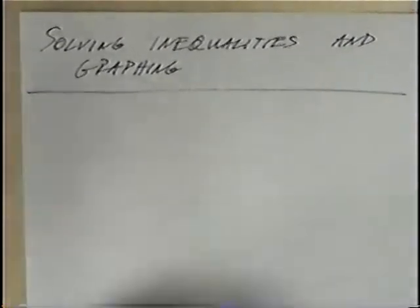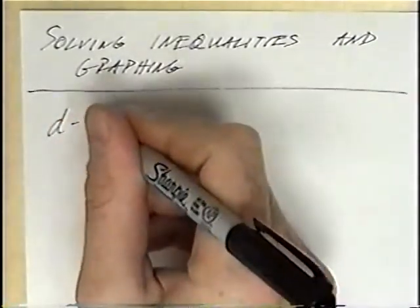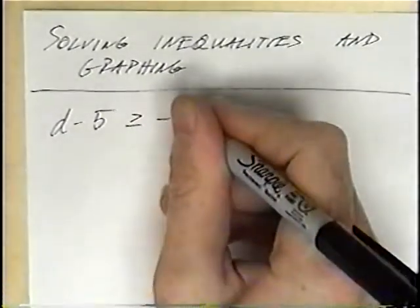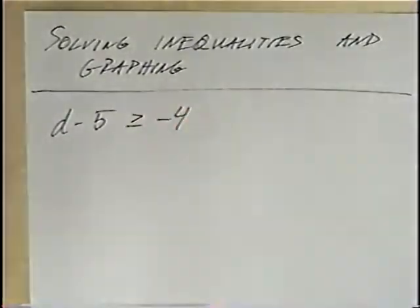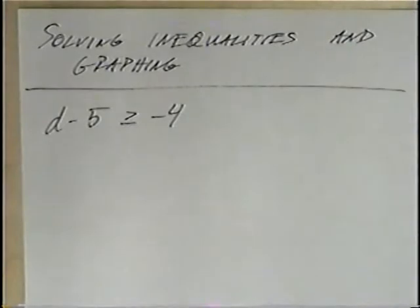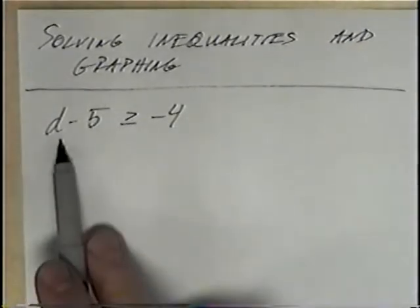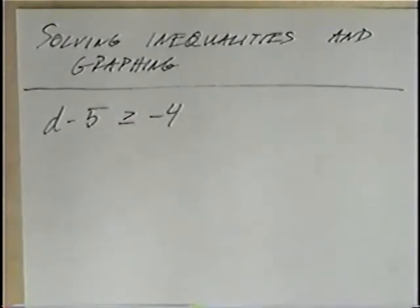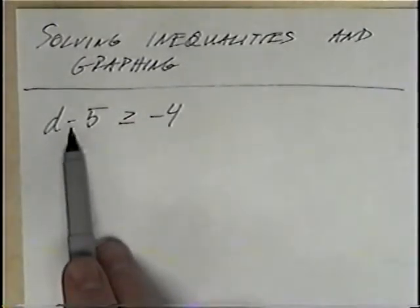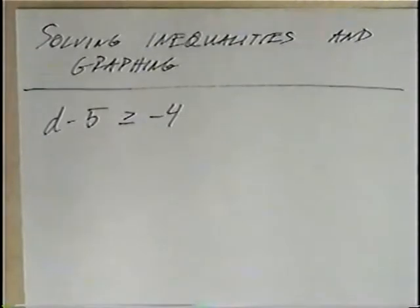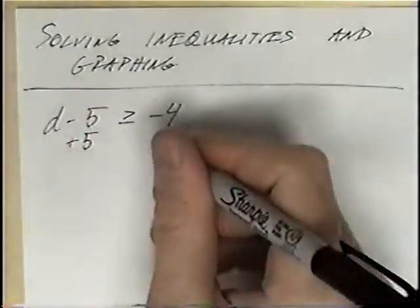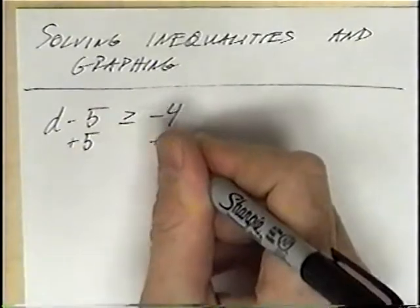The first problem today is D minus 5 is greater than or equal to negative 4. Before we can graph this we have to solve, or get D by itself, and then we can graph like we did in the previous section. To get D by itself we have to get rid of this minus 5. The opposite of minus 5 is adding 5, which we will do to both sides of the inequality.